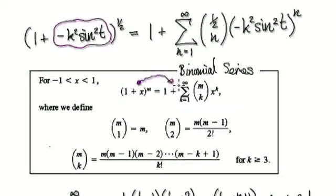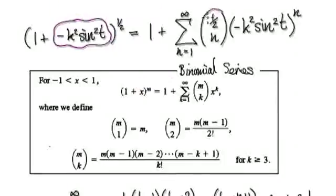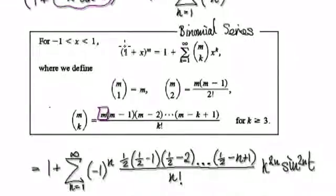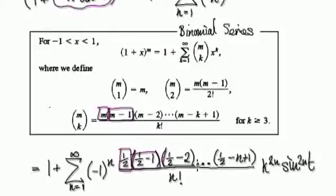You can jump from here and turn it into a series. When you turn this into a series, your eyes should zoom into this power here. The first term will be a half, and then you take away 1 — so a half take away 1, then a half take away 2, and so on, all the way to a half take away whatever's here.